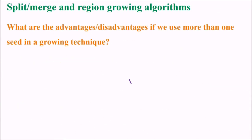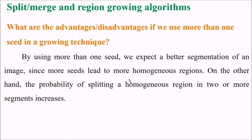Split and merge, a region growing algorithm. What are the advantages and disadvantages if we use more than one seed in a growing technique? By using more than one seed we expect better segmentation of an image, since more seeds lead to more homogeneous regions.